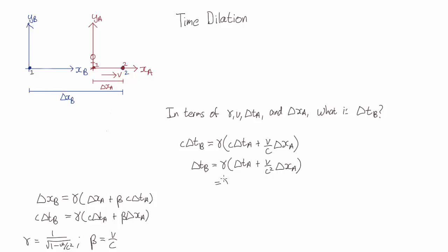So if we expand this, we have two terms. The first is our usual time dilation term for if the two events happened at the same location in Alice's frame. But we also have an extra term here, which we might recognize from the relativity of simultaneity.